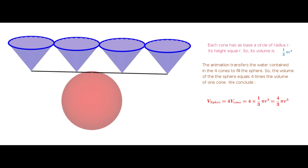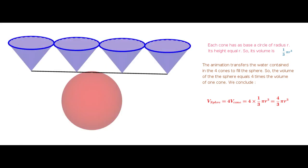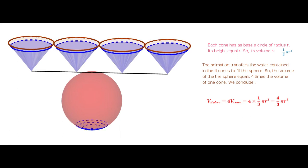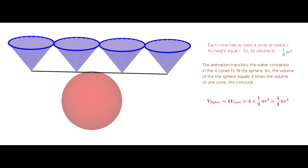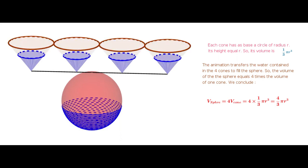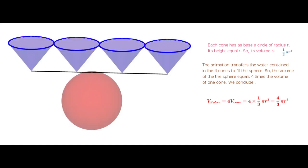Observe that the amount of water in all 4 cones fills the space in the sphere. Therefore, the volume of the sphere is equal to 4 times the volume of a cone, that is 4 × (1/3)πr³, which equals (4/3)πr³ cubic units.